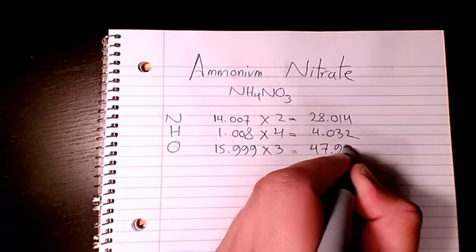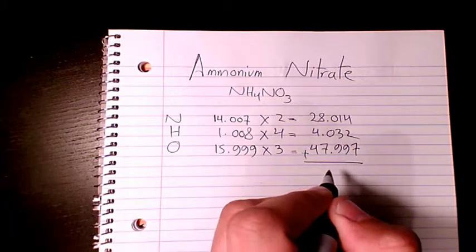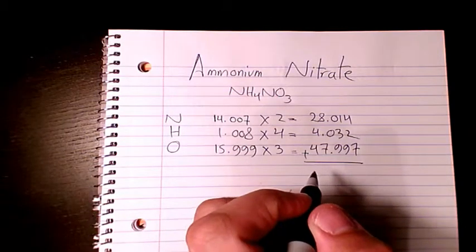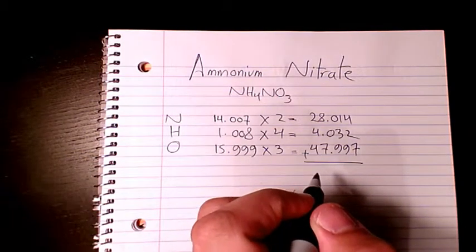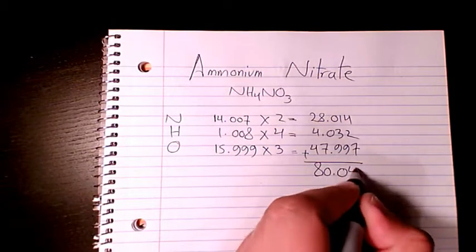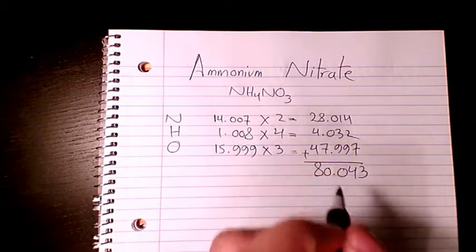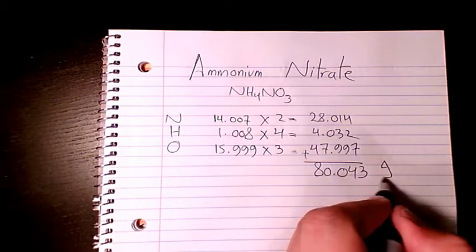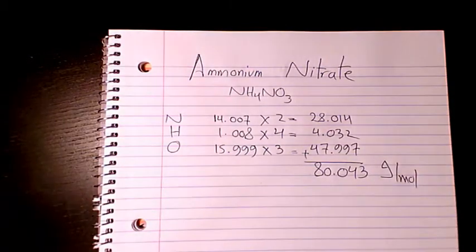Then you add them all - 4.032, 28.014, 47.997 - that equals 80.043 grams per mole. That's the unit for molar mass or molecular weight. So that's the molar mass or molecular weight of ammonium nitrate.